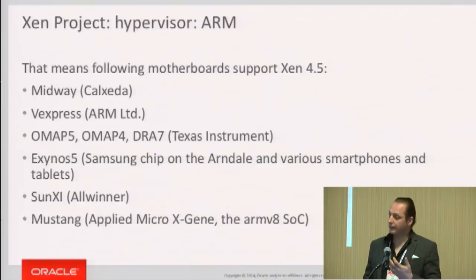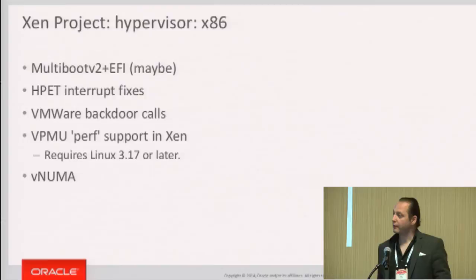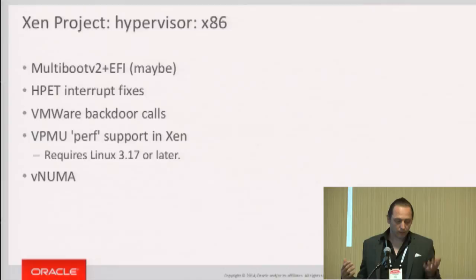On the x86 side — server, desktop, laptop — some items like HP interrupt fixes are postponed to Xen 4.6. But one important focus is UEFI and secure boot, which is supposed to make everything better and faster. It does, but there are pieces that need fitting together.